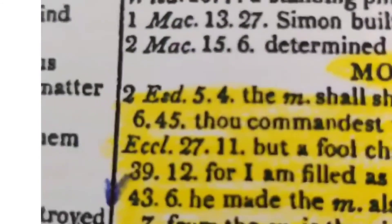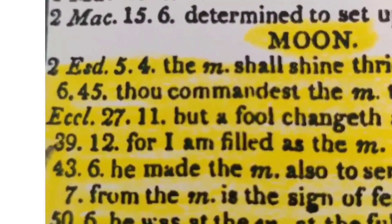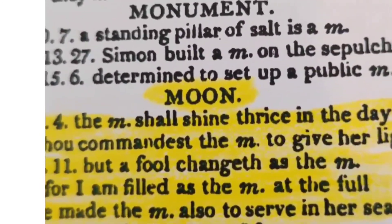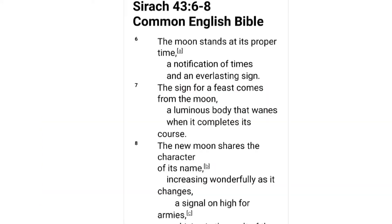Sirach 50:6 says 'as the moon at the full,' and Sirach 39:12 says 'for I am full as the moon at the full' — so it's talking about a full moon. Now, the King James Bible is not 100% correct because it had errors, so we have to go with different translations. At Nations of Kings and Priests we're not King James only — we compare translation comparisons. We go with the Masoretic text, the Greek Septuagint, the Codex, and others. We look things up with two or more witnesses.